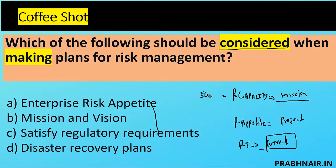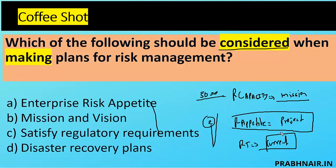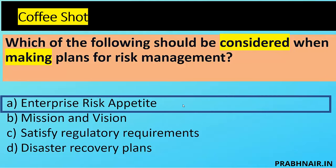Risk tolerance is the current level of deviation we have. For example, if business revenue is 5,000 and the maximum security breach we can bear is 2%, that is our risk appetite. When planning risk management, risk appetite is very important — all initiatives are driven and validated against it. Option A (enterprise risk appetite) is considered. Mission is too high-level; satisfying regulatory requirements is important but not the only factor. Disaster recovery plan comes after risk identification. The answer is A.